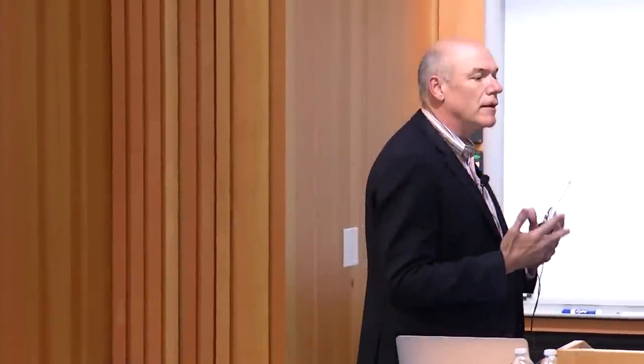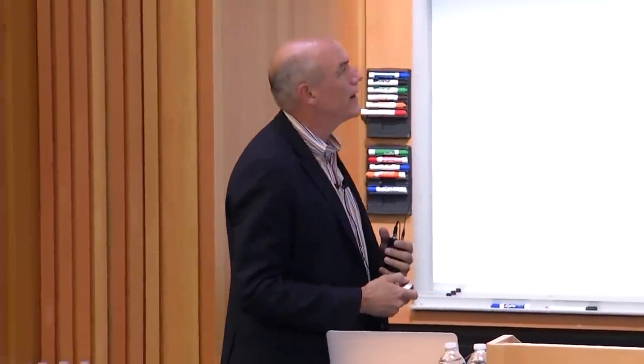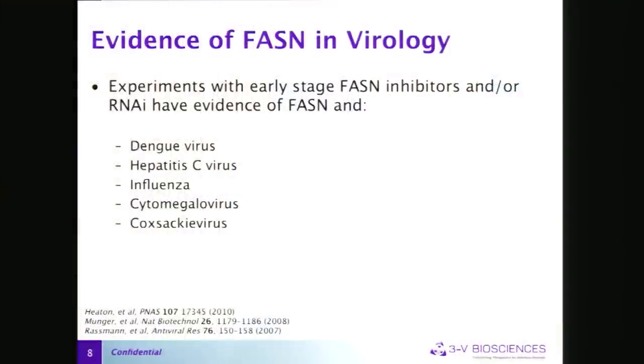We wanted to look for pathways that multiple viruses depend on. In PubMed, we found that dengue virus interacts with FASN, hepatitis C virus interacts with FASN, and early evidence from siRNA or older compounds suggests flu, CMV, and Coxsackie virus also interact with FASN. That was criteria number one — multiple viruses.